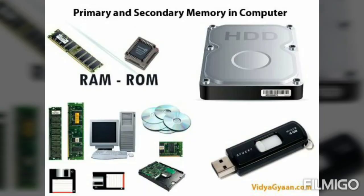Examples of storage media are internal hard disks, external hard disks, memory cards, USB flash drives known as pen drives, optical disks, magnetic strip cards and smart cards. Internal hard disk is present inside our CPU and laptop. External hard disk we attach separately to the computer. Memory cards, pen drives, optical disks and smart cards are also examples of storage media.